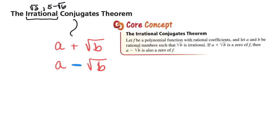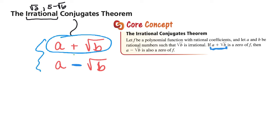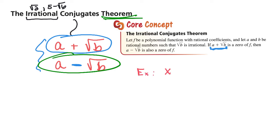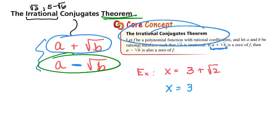The Irrational Root Theorem says that irrational binomials always come in pairs: if a plus root b is a solution, then a minus root b is also a solution. This is a proven theorem — it always occurs. For example, if x equals 3 plus root 2 is a solution, then x equals 3 minus root 2 is also a solution. You get the conjugate as a freebie.